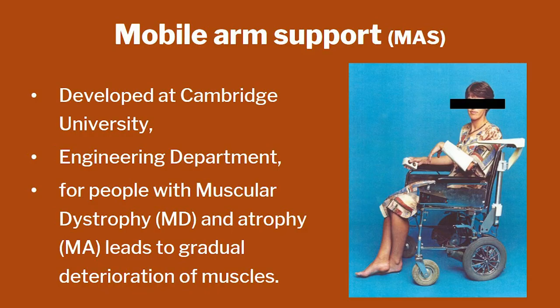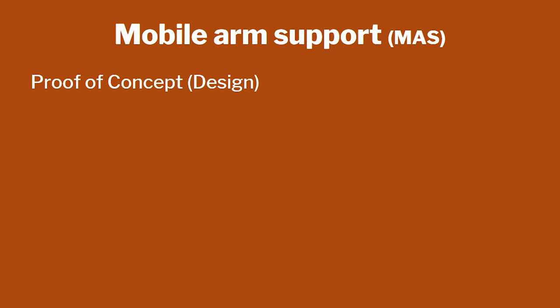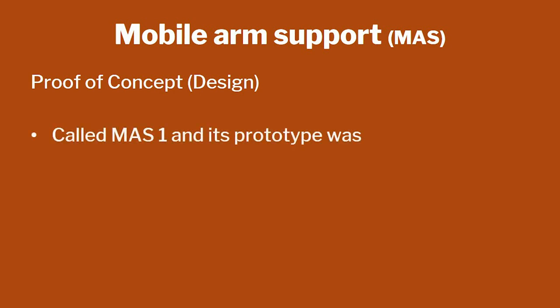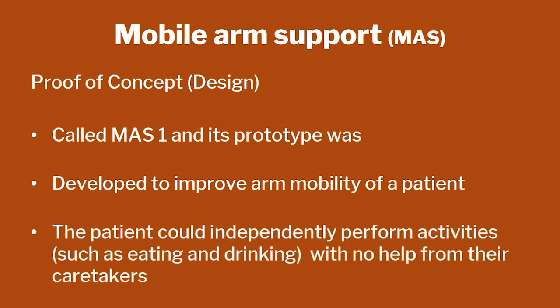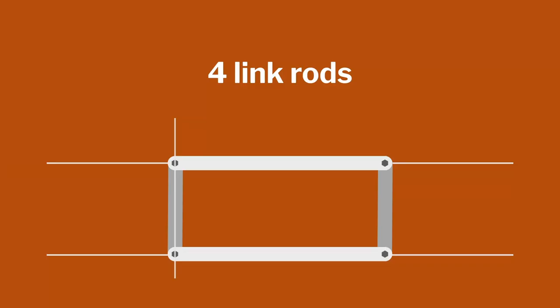The third example goes back to the mobile arm support project. I want to spend time on only one part of the production level — the detailed design — to show how complex it is and how important it is to pay attention to detail. We went through two different cycles. First, we created a proof of concept prototype we called mass one. That was focused on a certain group of people who would be agreeable to testing the device, so they could perform activities such as eating and drinking for which they are currently dependent on others.